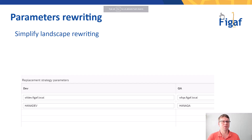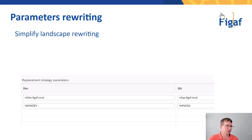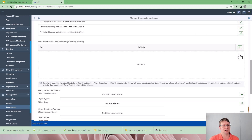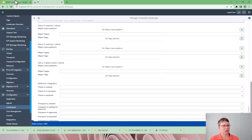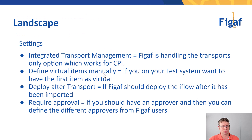The next item is landscape rewriting, where you have an option to configure connections or systems that are global in the landscape that you always want to rewrite. This could be host names or parameters that you know will always be different between dev and QA. ERP host names and SuccessFactors host names are one of the most common scenarios for this. Most of the time I'll be creating them on the fly as I'm creating a landscape and figuring out how to deal with them.